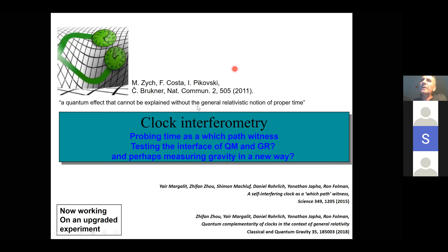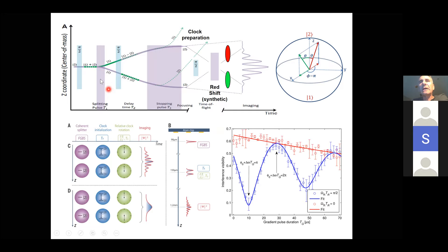To briefly explain the experiment: we take the half loop you already saw, but here instead of just letting wave packets expand and overlap, we create a Bloch sphere in each trajectory with another π/2 pulse — so it's a clock. Now there's a clock in each path. Then we apply the synthetic redshift with a very weak magnetic gradient, making the upper and lower clocks tick at different rates, just as proper time should. Then we look at the interference pattern and test the prediction from Vienna.